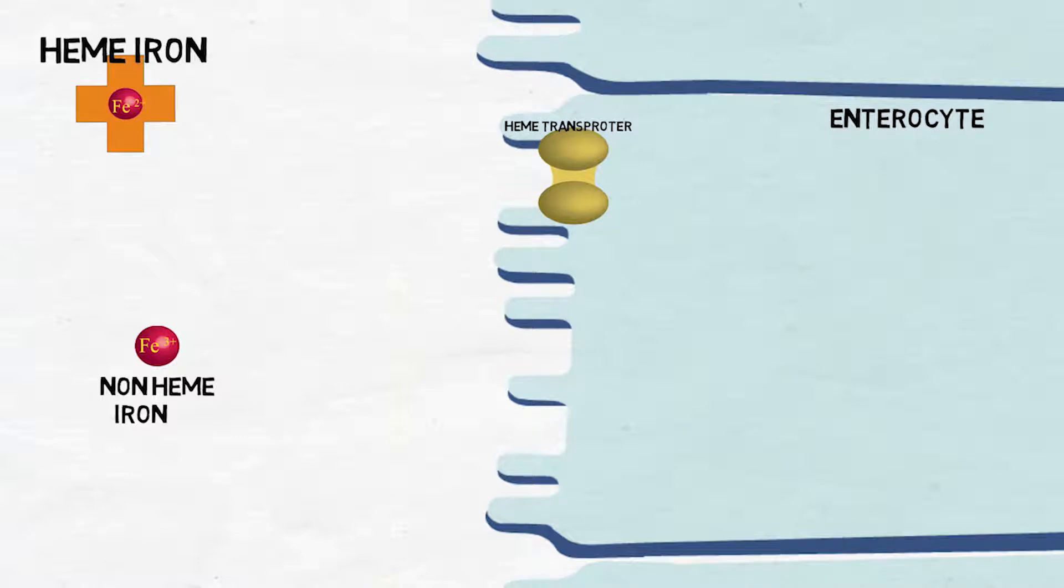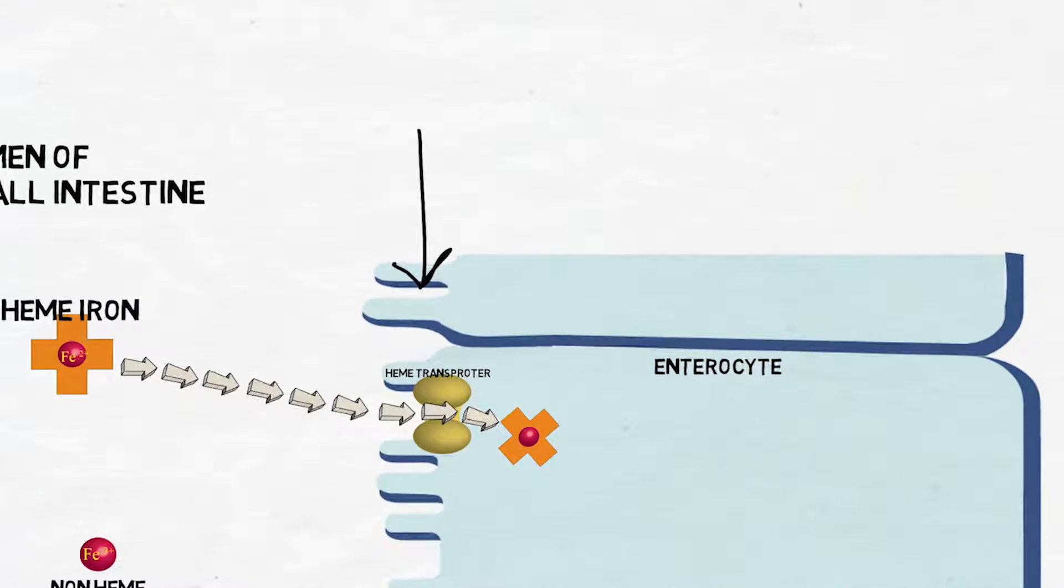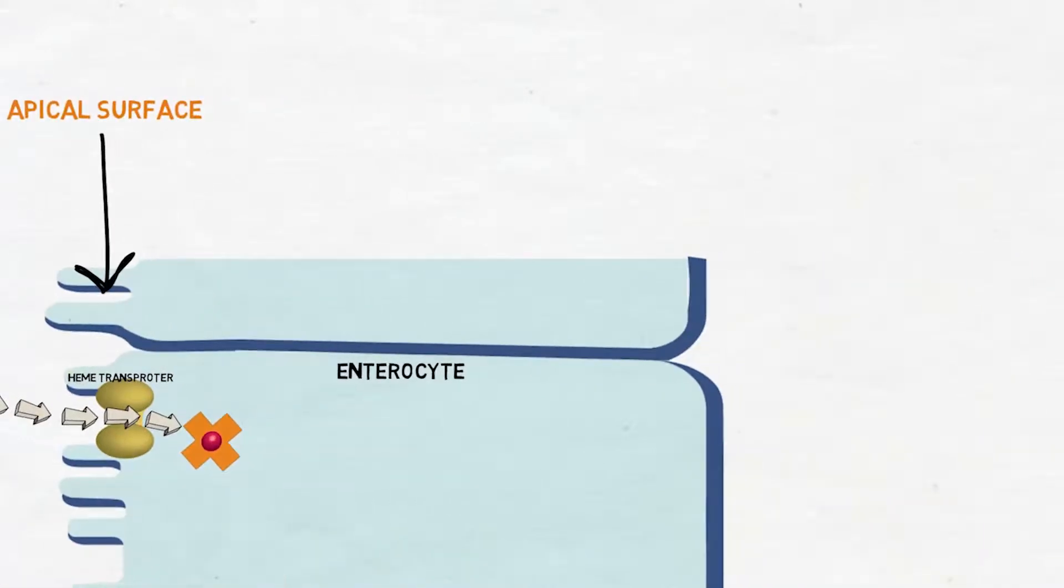Due to the separate heme transporter, heme iron absorption is more efficient and more easy than non-heme iron absorption. So this surface of the enterocyte is the apical surface. This surface is the basolateral surface.